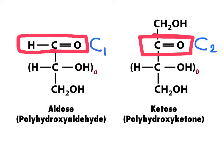Monosaccharides are also classified according to the number of carbons present. If there are three carbons, that will be a triose. Four carbons is a tetrose. Five carbons are pentoses, and six carbons are hexoses.